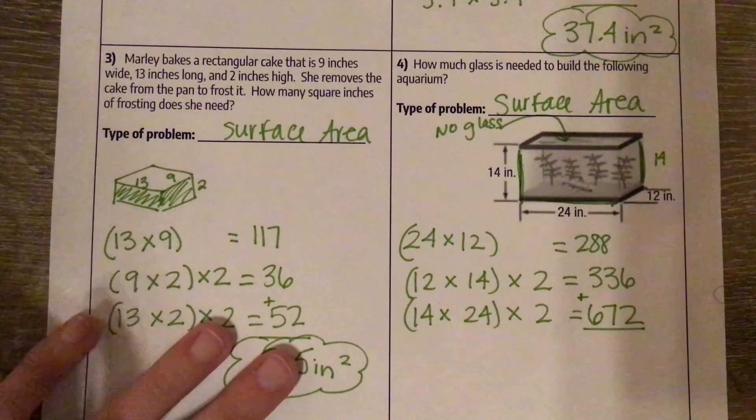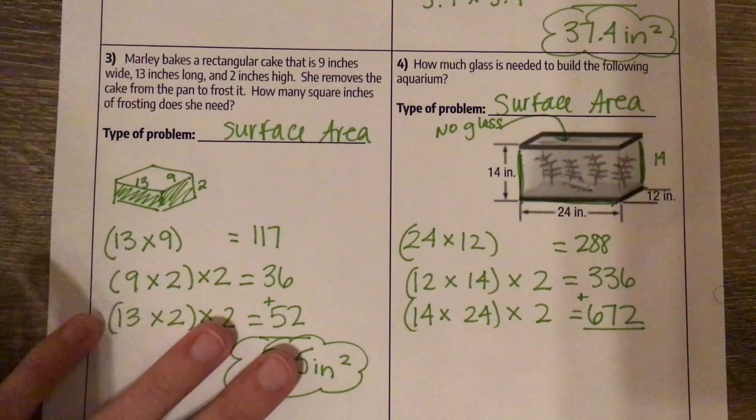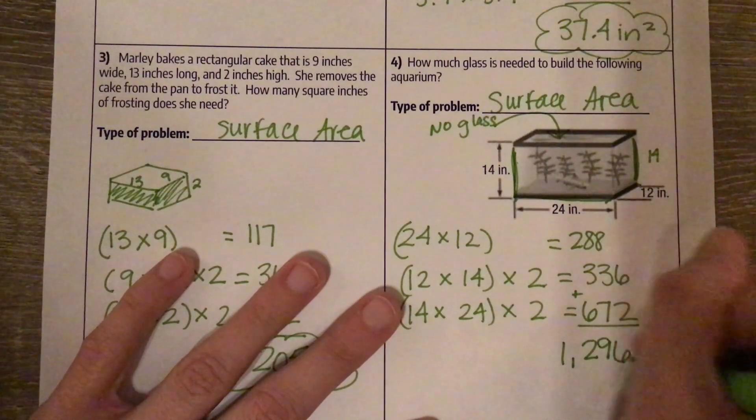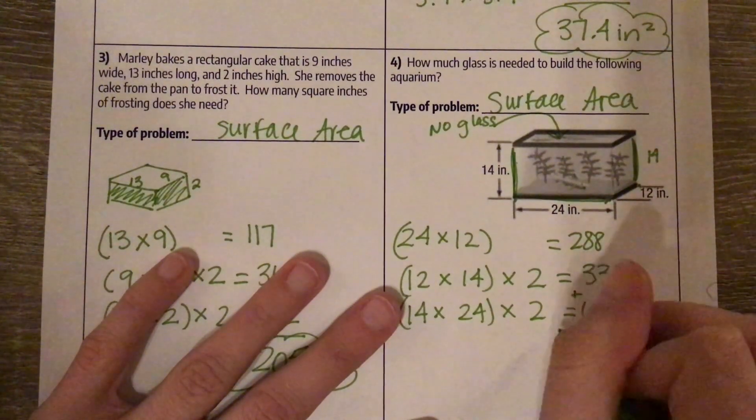So we're going to add 672 plus 336 plus 288 equals 1,296 inches squared.